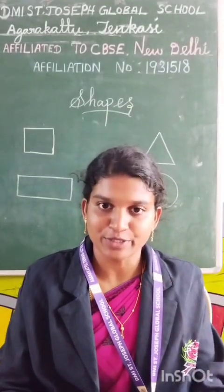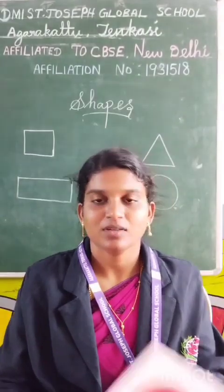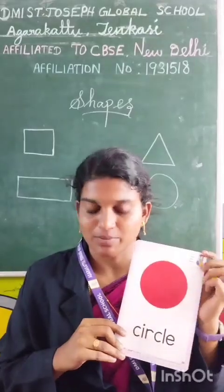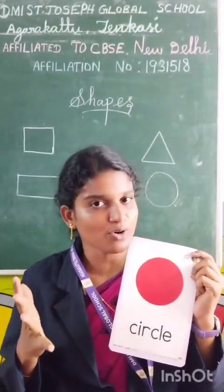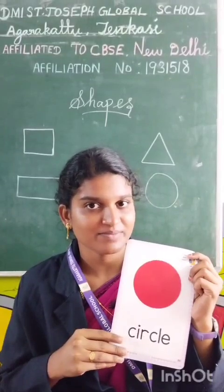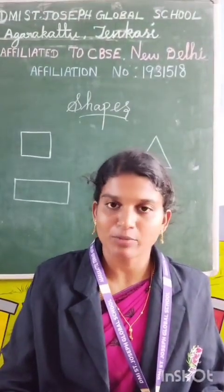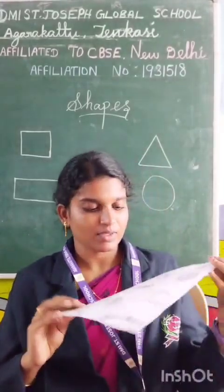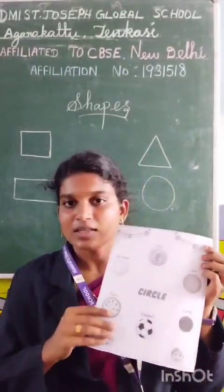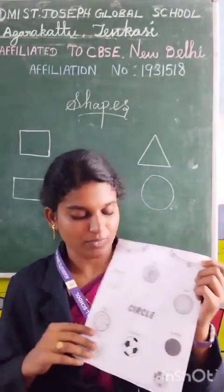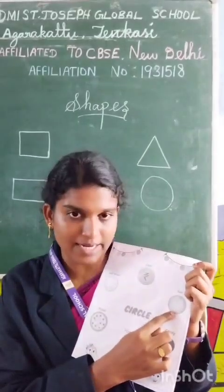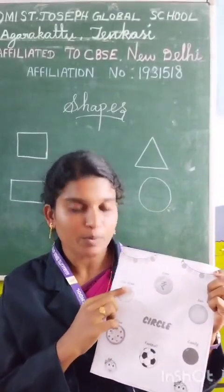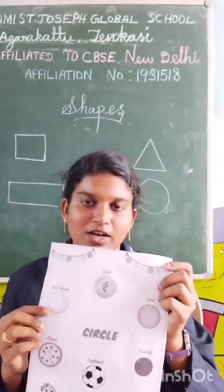Next, I am going to introduce circle shape. This is circle shape. What is this shape? Circle shape. Circle has no sides and no corners. Now I am going to show some examples of circle shape. These are the examples of circle shape. What are they? Coin, sun, candy, football, pizza, moon. These are the examples of circle shape.